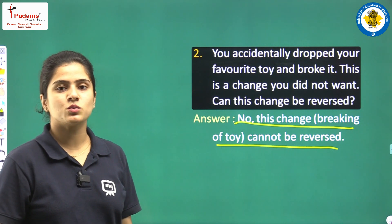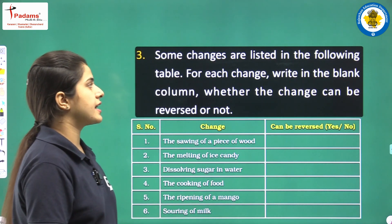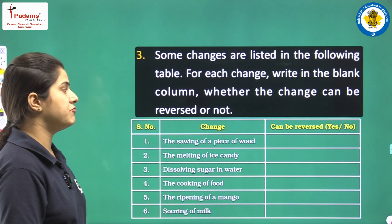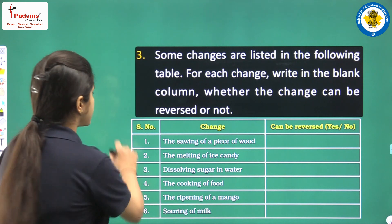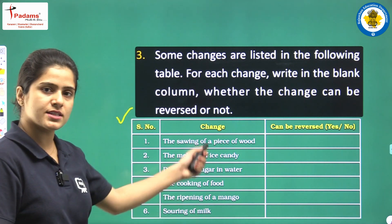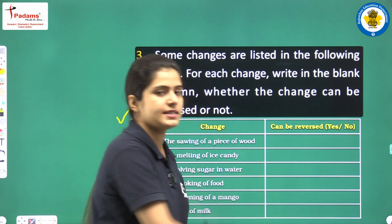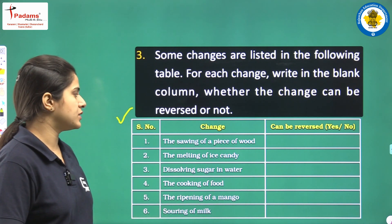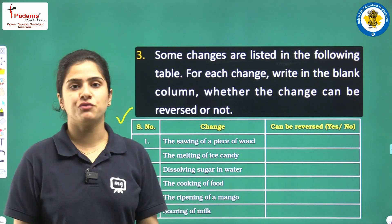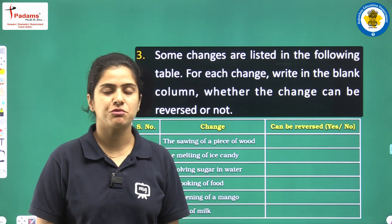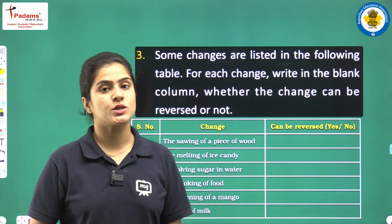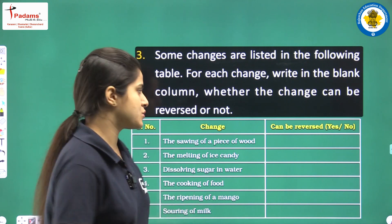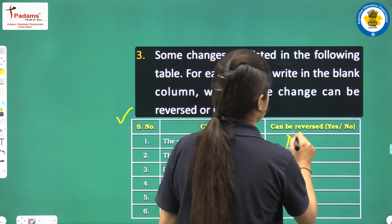Looking at the third question: some changes are listed in the following table. For each change, write in a blank column whether the change can be reversed or not, by mentioning yes or no. The first change is the sawing of a piece of wood, which means you are cutting the piece of wood. If you are cutting something, that change can't be reversed. Agar aap lakdi ke tukdon ko kaatenge, toh aap use dobara wo cheez nahi bana sakte. So the answer is no.